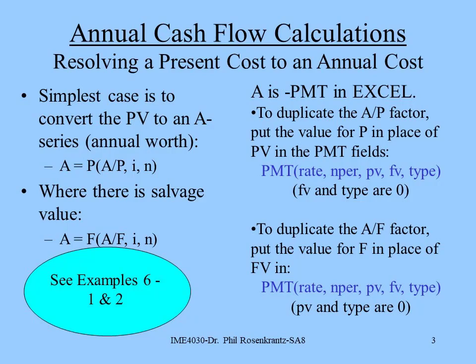Let's go to slide number three. What we do with the annual worth method is resolve all of our cash flows into uniform series — into annual cash flows — and then we compare those. In chapter five, with present worth analysis, we found the present worth of all cash flows and compared those. But in chapter six, we're converting to annual costs and annual benefits. If we have a present value, the way to convert it into an annual worth is to multiply by the A/P factor. In Excel, the function would be PMT.